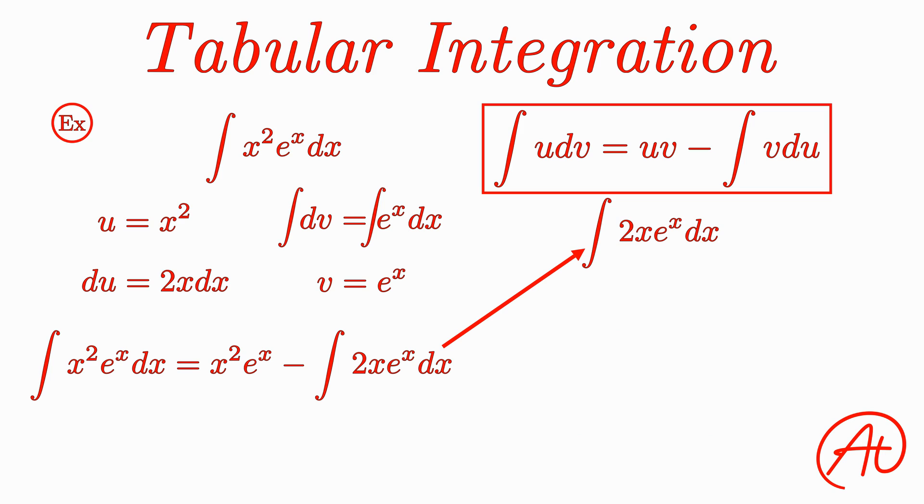This time, let's make u equal to 2x and dv equal to e to the x dx again. To find du, we again take the derivative of u and multiply by dx to get that du is equal to 2dx. Then integrating dv, we again get v equal to e to the x.